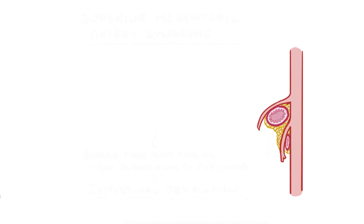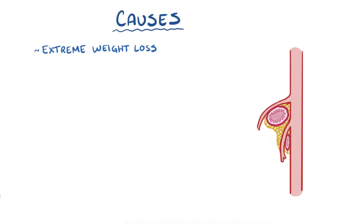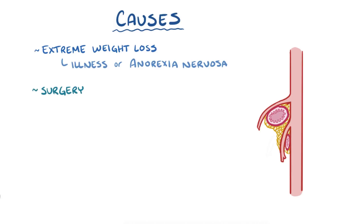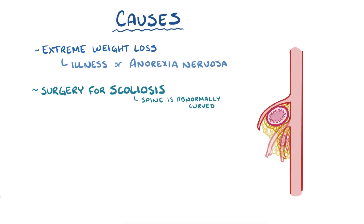There are a few reasons why this might happen. The most common one is extreme weight loss from any cause, like an illness or even intentional weight loss like anorexia nervosa. In young people, another common cause of superior mesenteric artery syndrome is surgery for scoliosis, which is a condition where the spine is abnormally curved.